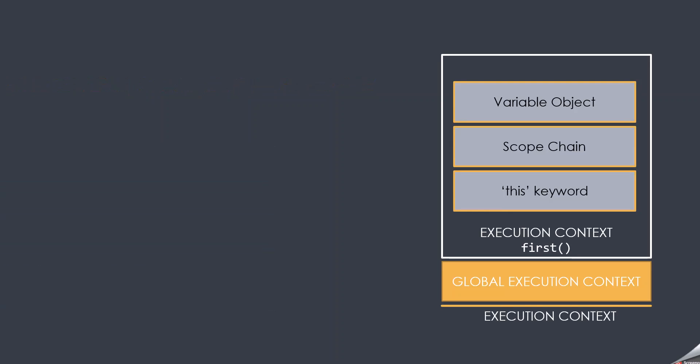When you call a function, an execution context is created in the execution stack for that function. This execution context has three properties: variable object, scope chain, and this keyword. We have already talked about the variable object and scope chain in our previous lectures. So in this lecture, we are going to talk about how the JavaScript engine determines the value of this variable.